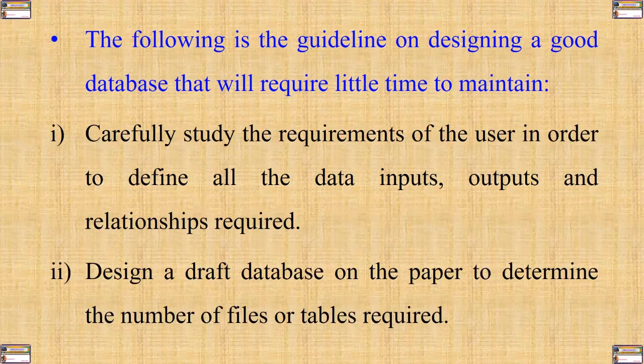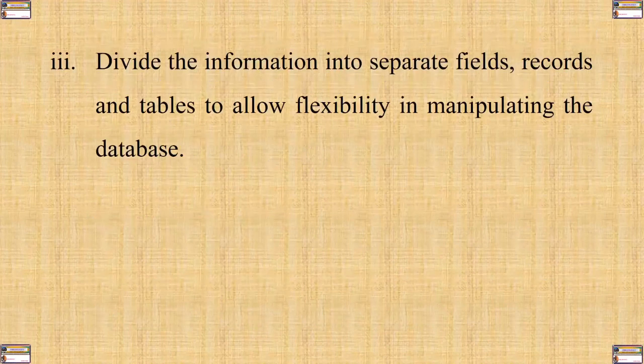Number two: design and draft the database on paper in order to determine the number of files or tables required. Number three: divide the information into separate fields, records, and tables to allow flexibility in manipulating the database.